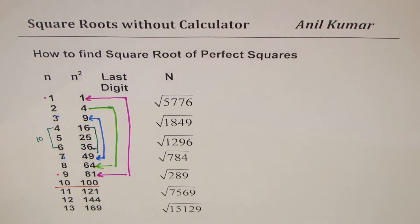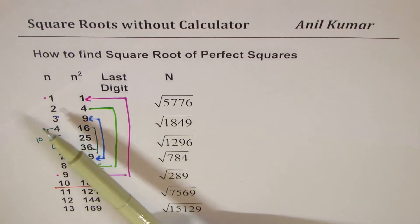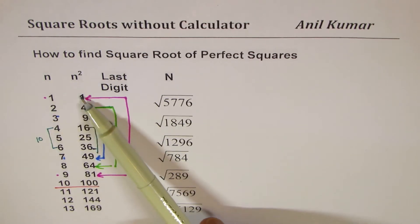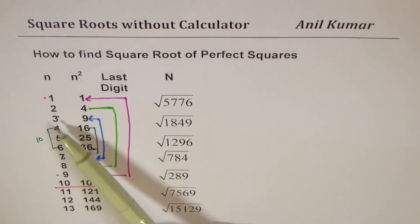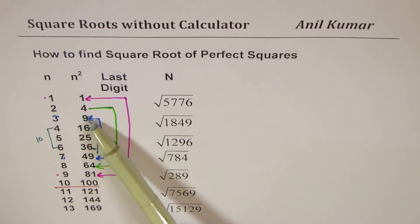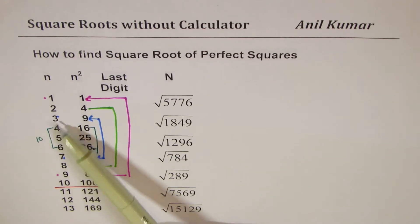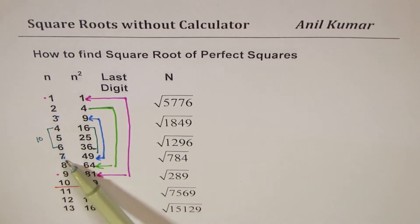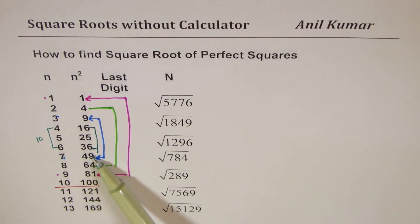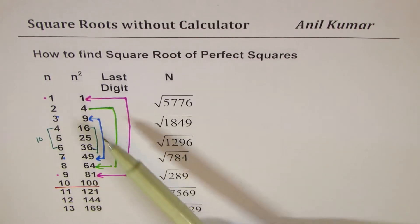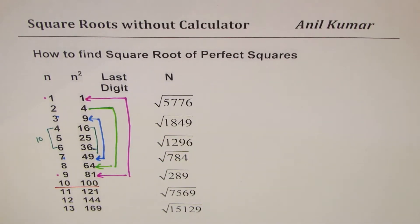Similarly, last digit 6 is repeated for 4 and 6, whose sum is also 10. So that's a neat way of remembering: last digit 1→1, last digit 4→2, last digit 9→3. If you know 3 gives last digit 9, then 7 also gives last digit 9 since 3+7=10. That's why I'm emphasizing this pattern.